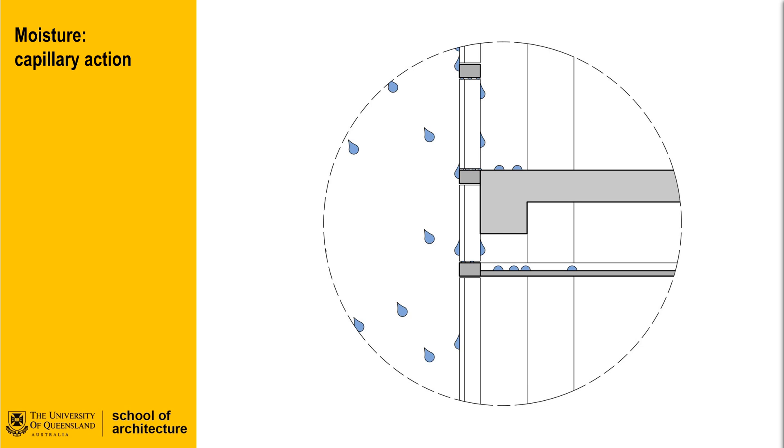Moisture tends to get into the most unlikely of places. Small gaps with differences in pressure between two sides of a surface can lead to capillary action, which is the tendency for small streams of water to flow through narrow spaces, even against gravity.